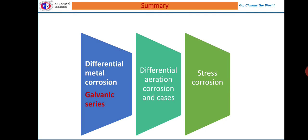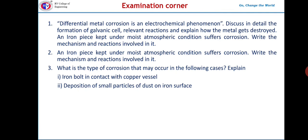In today's class we learned different types of corrosion: differential metallic corrosion, differential aeration corrosion, and stress corrosion, as well as the difference between galvanic corrosion and the electrochemical series. An examination question asks to explain the wet corrosion mechanism with the help of a diagram, including reactions at the anode and cathode, and to identify the corrosion product formed during corrosion.